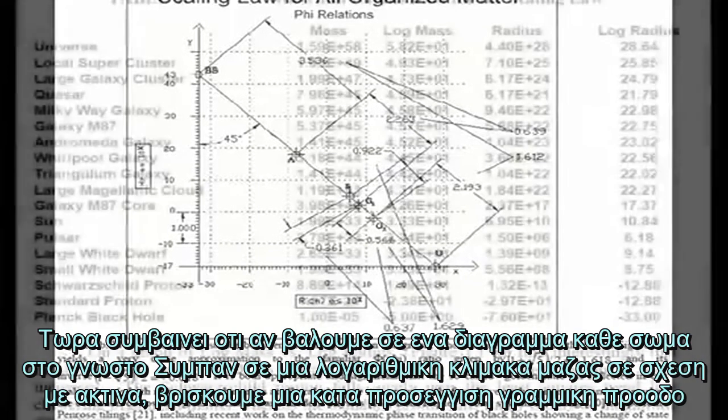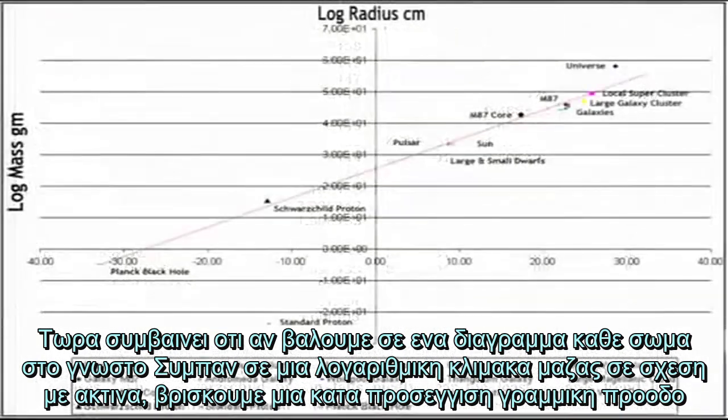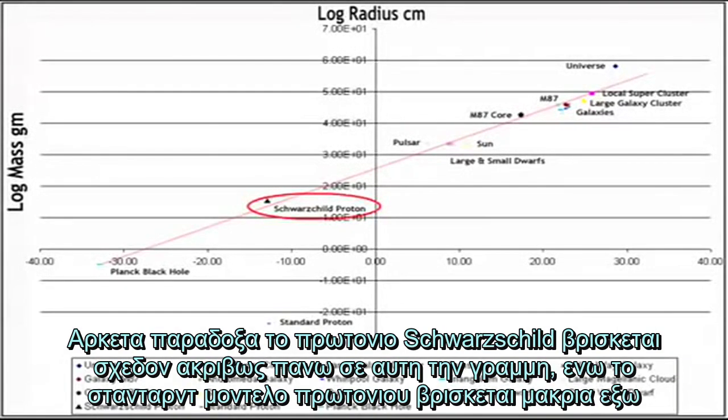Now it turns out if we plot every object in the known universe onto a logarithmic scale of mass versus radius, we find an approximate linear progression. Oddly enough, the Schwarzschild proton sits almost exactly on this line, while the standard model proton sits far outside, suggesting that the standard model is incorrect after all.